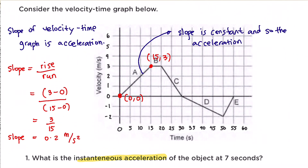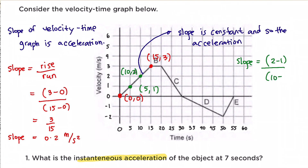The unit for this is meters per second squared. To show that the slope is actually constant, let's choose another two points. This time let's choose the point at coordinates (5, 1) and the point at coordinates (10, 2). Solving for slope again using rise over run: 2 minus 1 is 1, and 10 minus 5 is 5. The slope is still 0.2 meters per second squared.